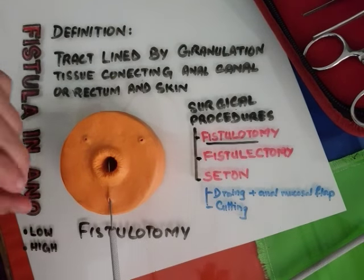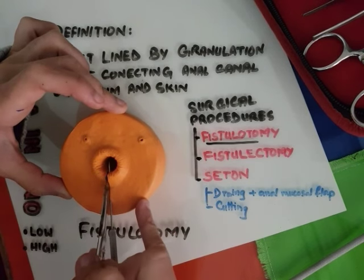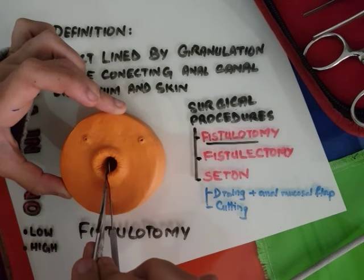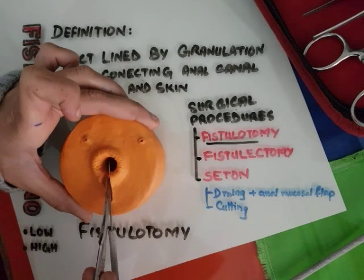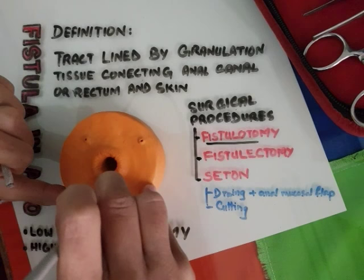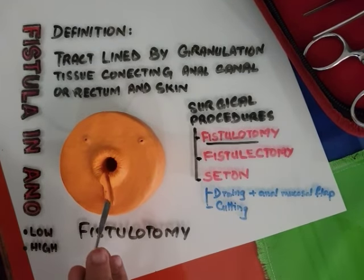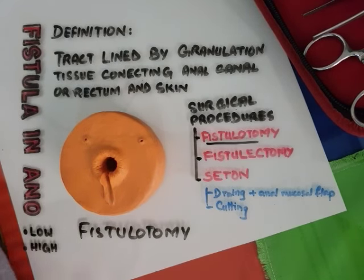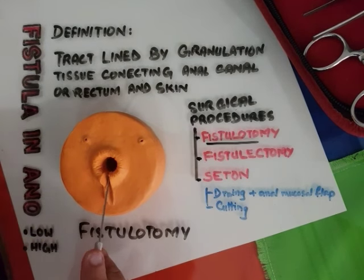Now that we know the exact tract, we cut it and lay it open. We cut all the granulation tissue and allow it to heal by secondary intention — we just do the dressing, or we can marsupialize it in some cases. This was fistulotomy. We cannot perform this procedure in high anal fistulas because in that case a major part of the sphincter will be cut and it will lead to anal incontinence.